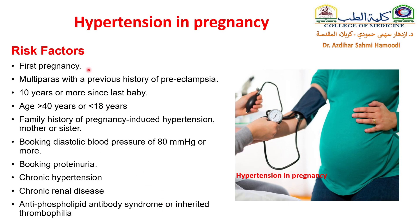Risk factors include: first pregnancy, multiparity with a previous history of preeclampsia, 10 or more years since last baby, older or very young patient, family history of pregnancy-induced hypertension (e.g., mother or sister), booking diastolic blood pressure of 80 mmHg or more, booking proteinuria, chronic hypertension, chronic renal disease, antiphospholipid antibody syndrome, and inherited thrombophilia.